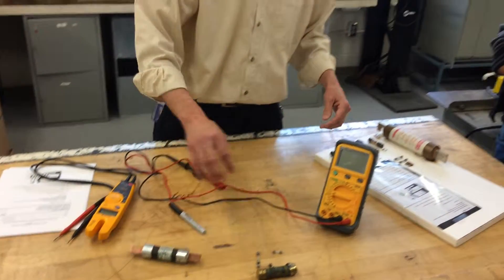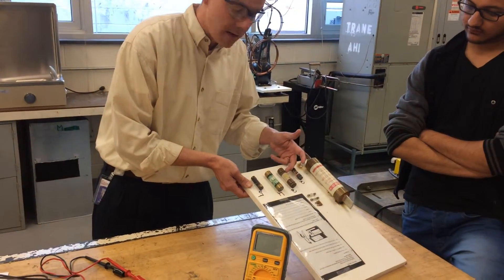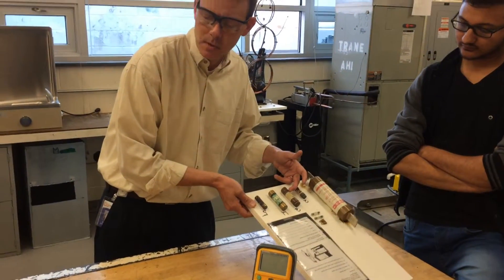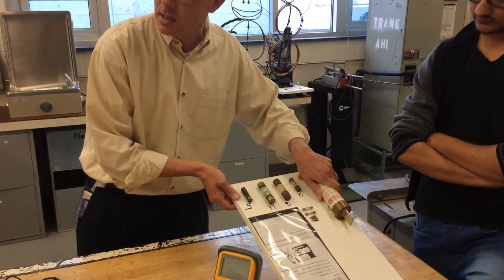And all these fuses, they come in different styles and sizes. Some of them have a glass coating, some have a cardboard or paper coating - thick paper, real thick cardboard. Some have a ceramic coating or a fiberglass coating.